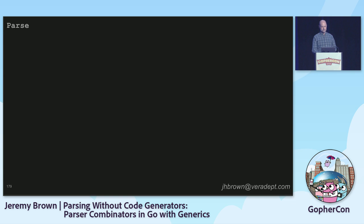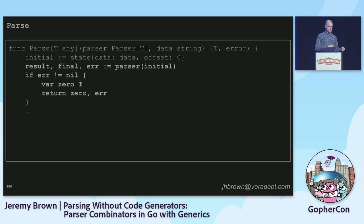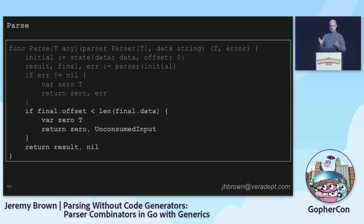Let's look at the actual `parse` function. It takes a parser and the input string and returns either the type of the parser or an error. The initial thing it does is make an initial state — your input string with an offset of zero, having consumed no input. Then it runs your parser on that state and gets a result or an error. Optionally — and this is something I did because it worked for me — if you didn't consume all the input, that's a different kind of error: you left input in the stream. You might not want that behavior. But that's really it — you run the function, get the result, and you're off to the races.